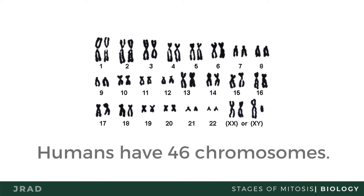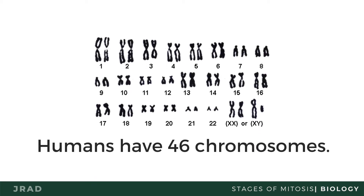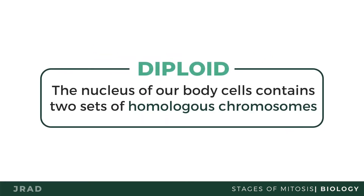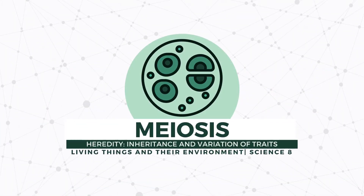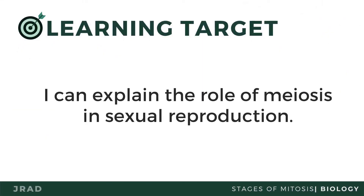Humans typically have 46 chromosomes. This is our diploid number. Diploid means the nucleus of our body cells contains two sets of homologous chromosomes, which carry the genes controlling the same traits. In this video lesson, we are going to talk about meiosis. Specifically, we will explain the different stages of meiosis as well as its role in sexual reproduction.